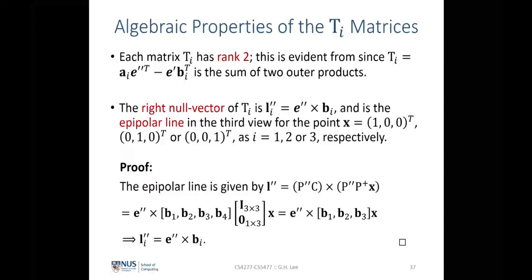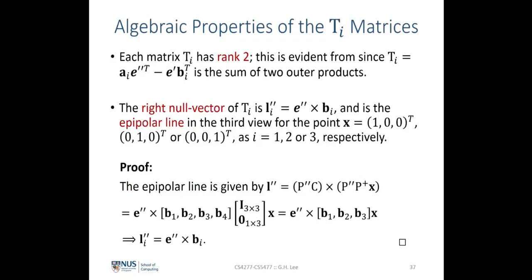Let's look at several algebraic properties of the Ti matrices in the trifocal tensor. Each of the three-by-three Ti matrices has a rank of two. This is because the Ti matrix is made up of the sum of two outer products, and we said earlier that the sum of two outer product terms forms a rank-two matrix.